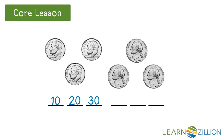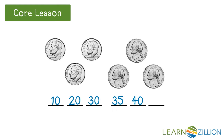She also has three nickels. Nickels are worth five cents. She needs to skip count the nickels by five starting from thirty, because she already has thirty cents. So the next numbers would be 35, 40, 45. Now she knows that she has forty-five cents.